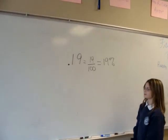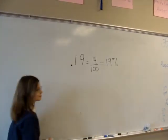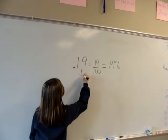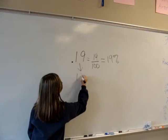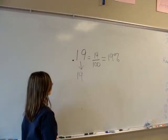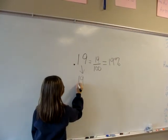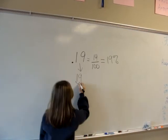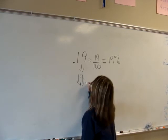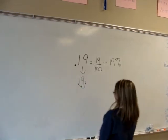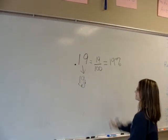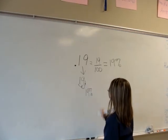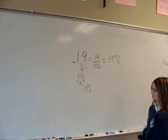We also can take a shortcut by going from a decimal directly to a percent. First, we write the number without the decimal point, then we put our marker where the decimal point originally was and move it two places to the right, to the right, to the right. We'll add the decimal and the percent sign, and 0.19 is 19 percent.